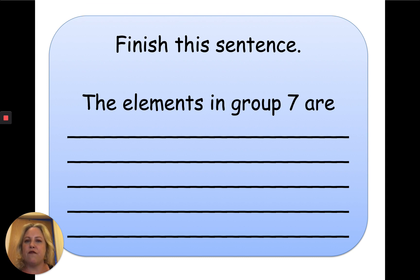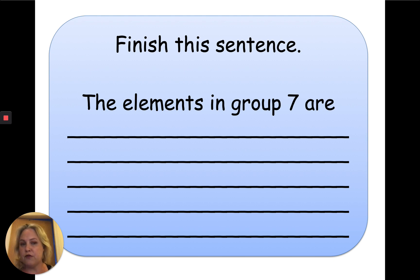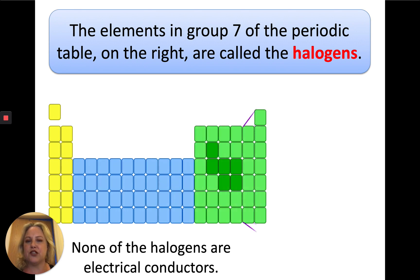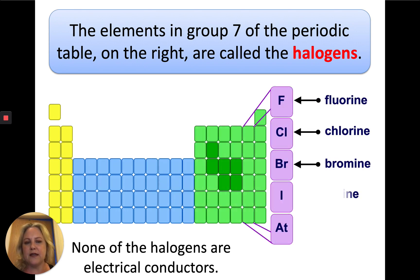So finish this sentence. You may have already watched a little video going through some of the group 7 elements — it'd be worthwhile doing that and seeing if you can put something into this sentence. Pause the video and complete that now. The elements in group 7 of the periodic table are also called the halogens and they are positioned over here.